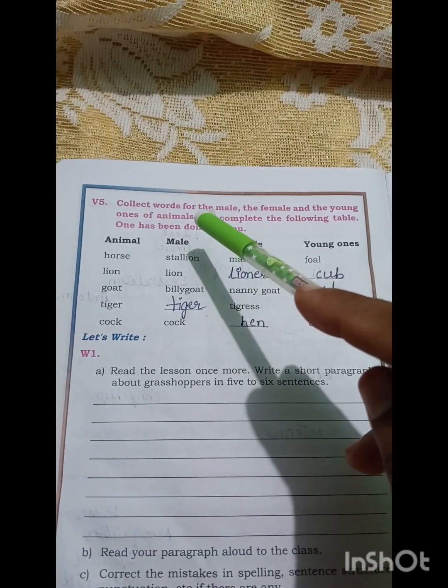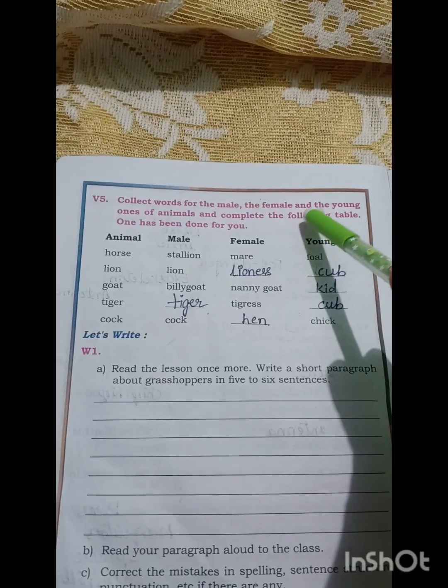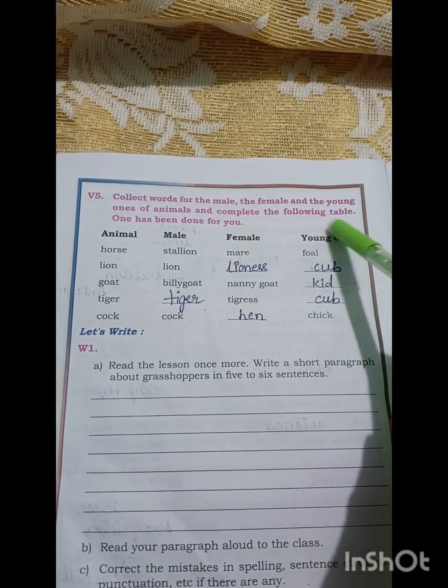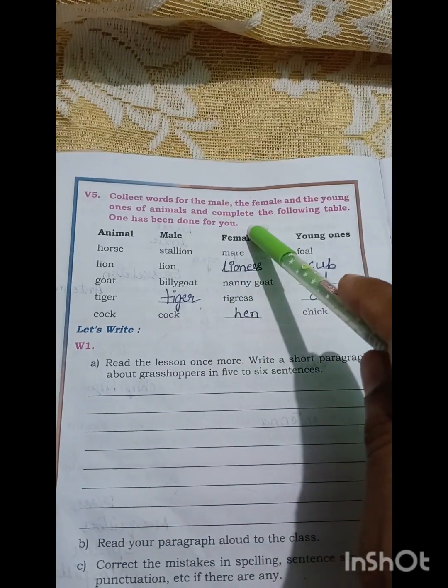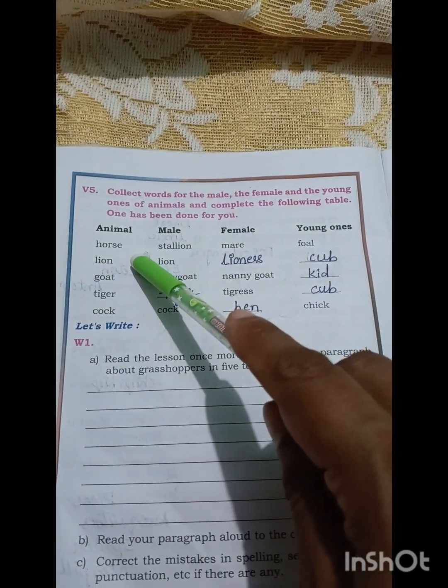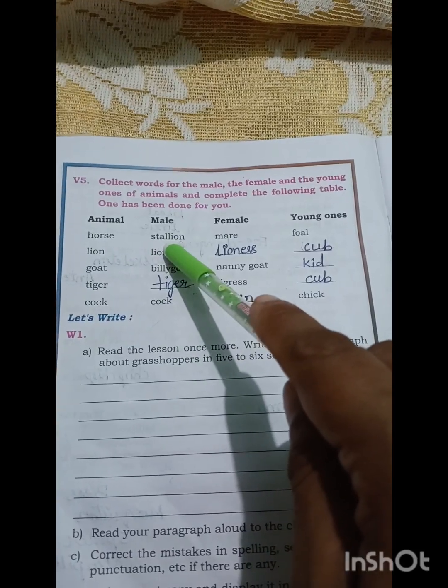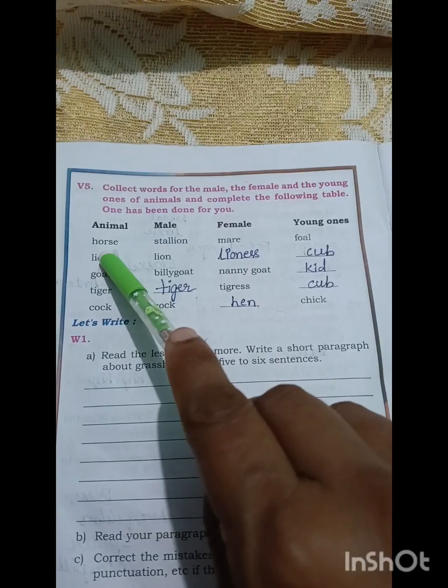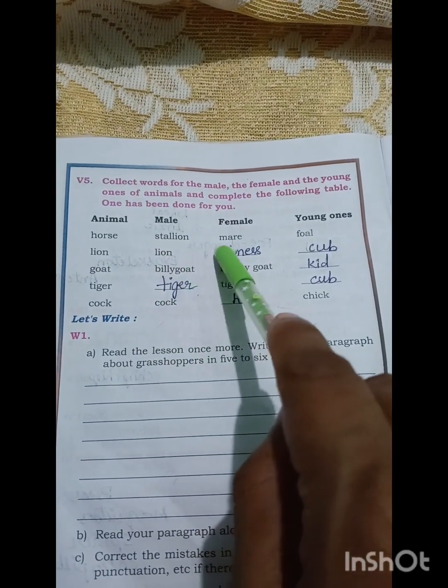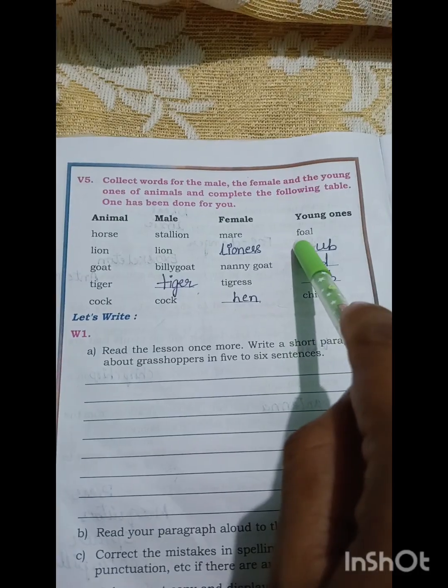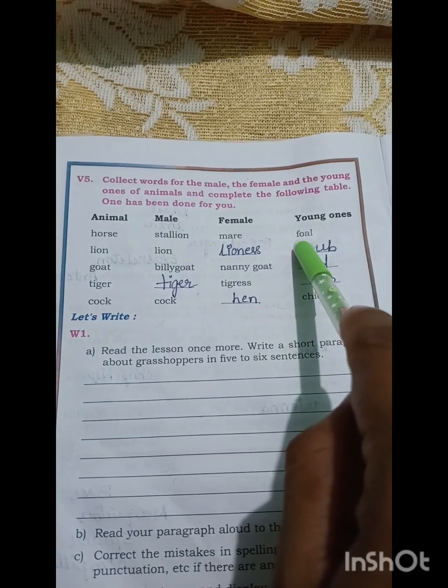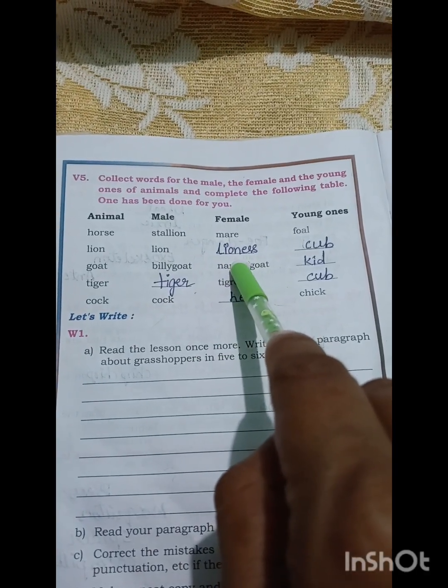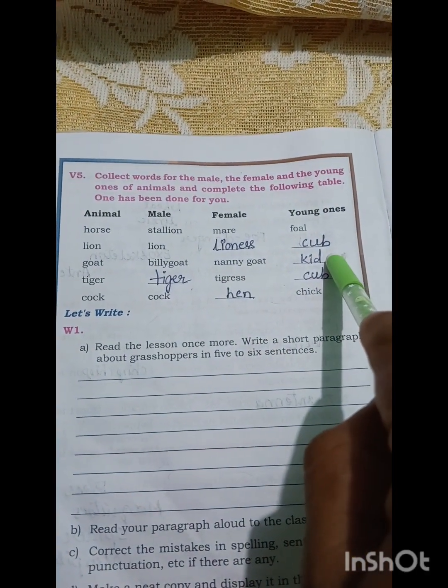Collect the words for the male, the female, and the young ones of animals and complete the following table. One has been done for you. Horse: stallion, mare, foal. Lion: lion, lioness, cub.